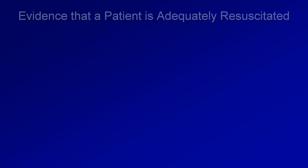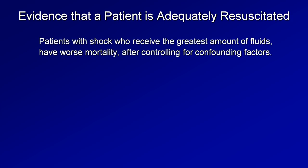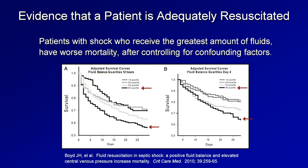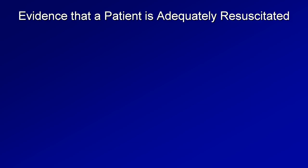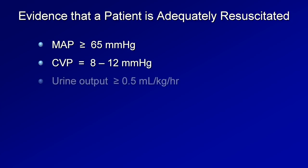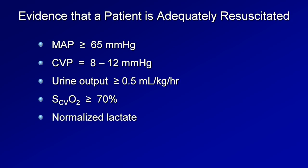So how do we know when a patient has been adequately resuscitated — when it's time to back off on the fluids? It's critical to know this because patients with shock who receive the greatest amount of fluids have worse mortality after controlling for confounding factors. The primary mechanism is believed to be the contribution of excess fluid to the development of pulmonary edema. The evidence of adequate resuscitation is typically given as mean arterial pressure of at least 65 mmHg, CVP of 8 to 12, urine output of at least 0.5 mL per kg per hour, central venous O2 saturation of at least 70%, and normalized lactate levels if initially elevated.